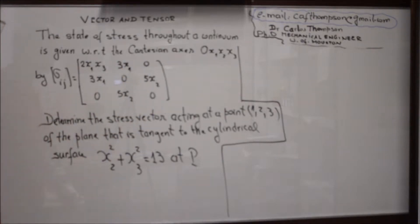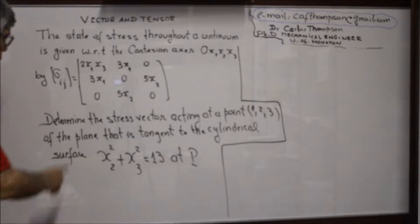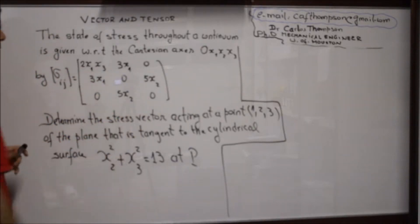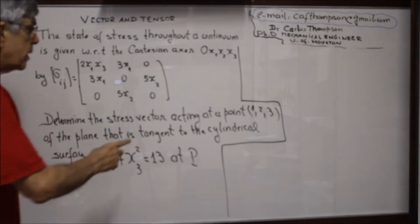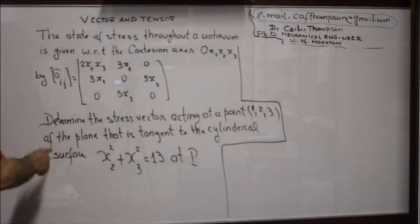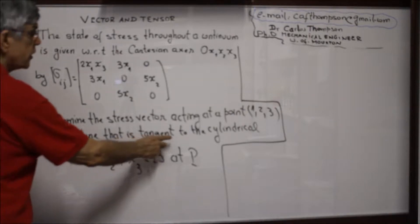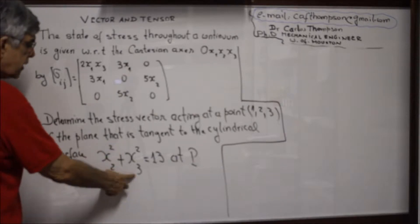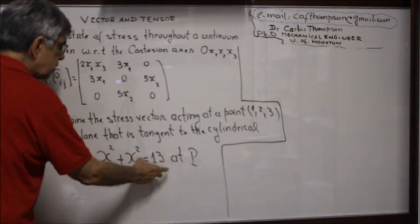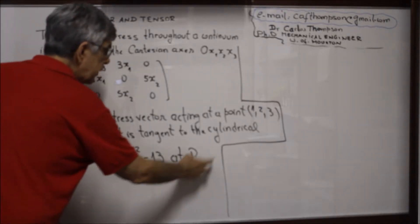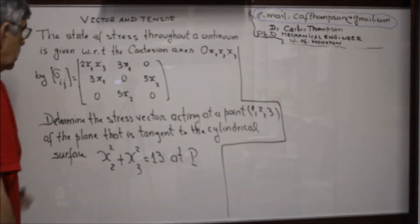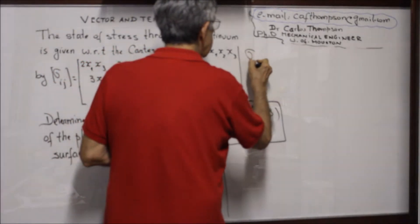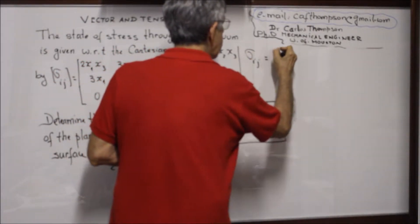You see that this matrix is a symmetric matrix. Now, the problem asks for the stress vector acting at a point P on the plane tangent to the cylindrical surface X2² + X3² = 13 at point P. Let's calculate sigma_ij at point P.